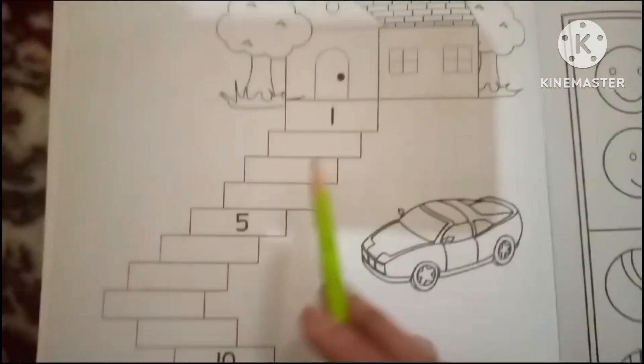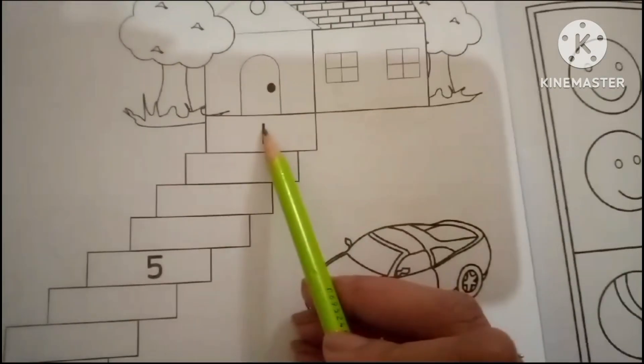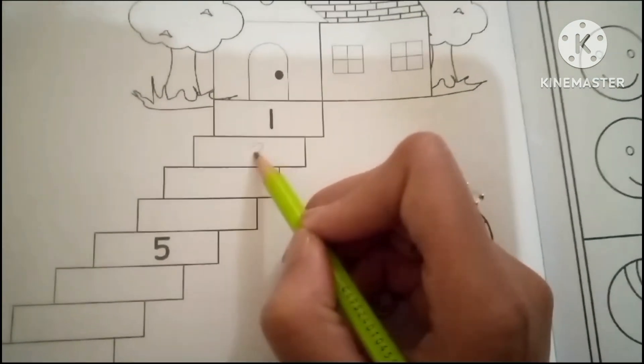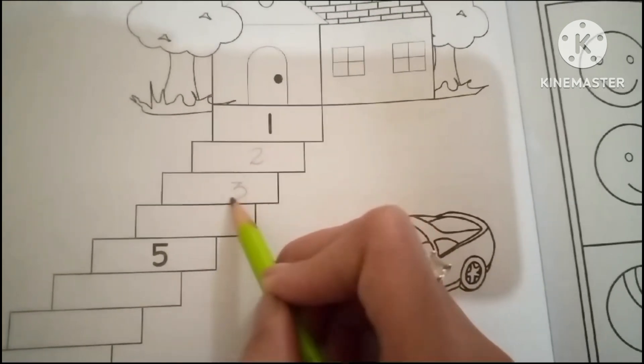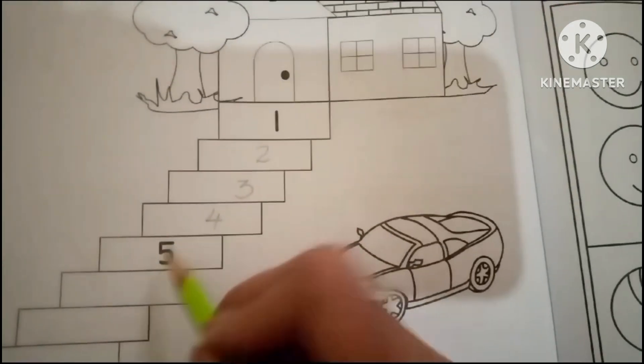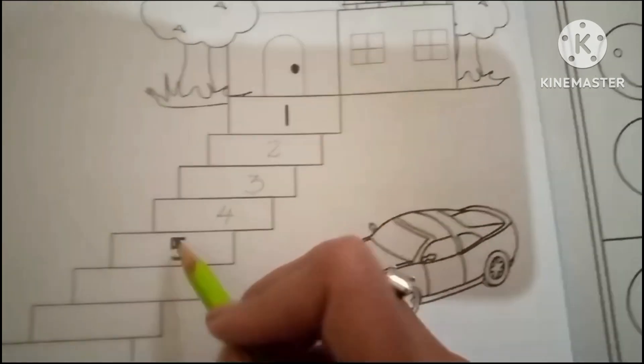This is different. One, what comes after one? Two. Two stairs, then three, four, five. One, two, three, four, five.